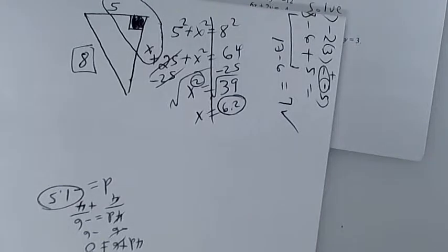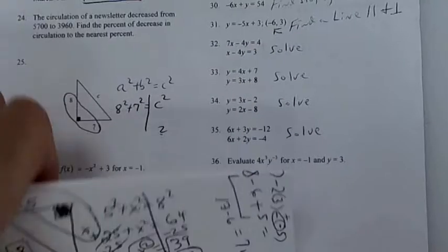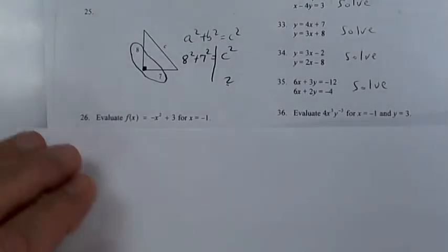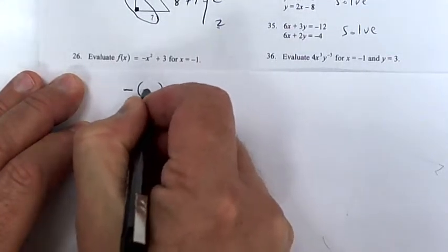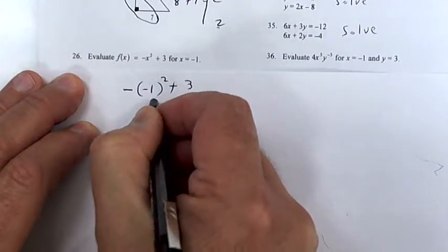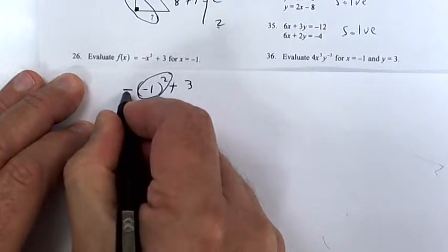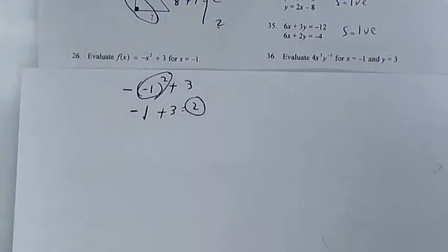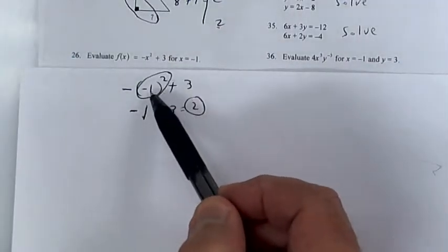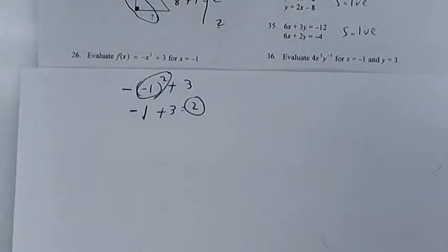Make sure you color the box — the ones with the box go together. For the evaluate problem: put negative, then parentheses, negative one squared plus 3. Negative one times negative one is positive one, but that outside negative makes it negative. The answer is 2. Only the negative one inside is squared — not the outside negative.